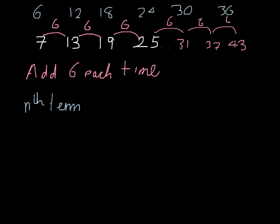What's the nth term of the 6 times tables? Well, it's 6n. Why is that? Because the first one's 6 times 1, the next one's 6 times 2, 6 times 3, 6 times 4, 6 times 5, 6 times 6. So, in general, it's 6 multiplied by a number.